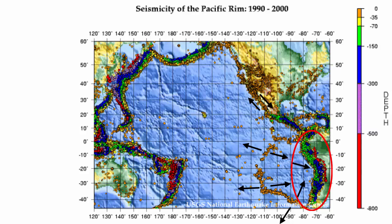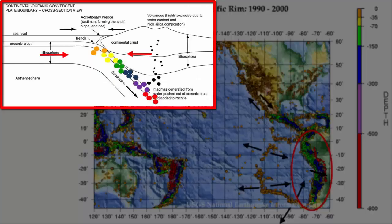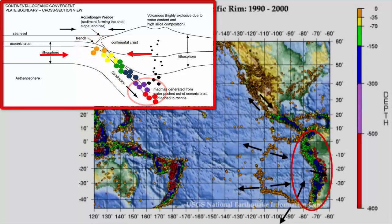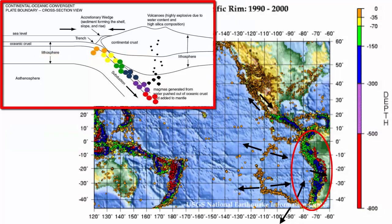As the ocean plate subducts under South America, it descends to deeper and deeper depths. The shallowest frictional sticking and consequent release will happen at the top of the subduction zone. Further down in the subduction zone, you'd expect deeper sticking and deeper quakes. So these color-coded earthquake maps act like an x-ray, giving us an image of the depth of the subducting plate at various distances from the subduction zone itself. We can see the plate subducting under South America.